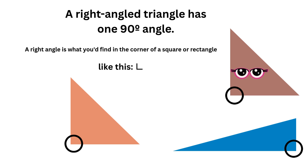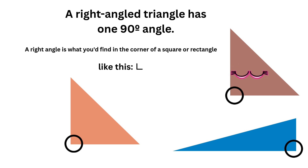The corner of the triangle is called a vertex, and in this case each one is 90 degrees.